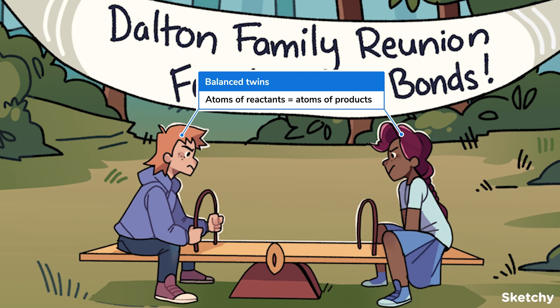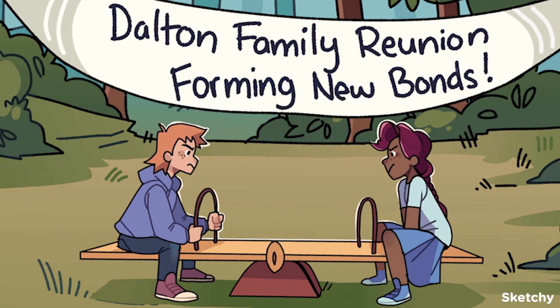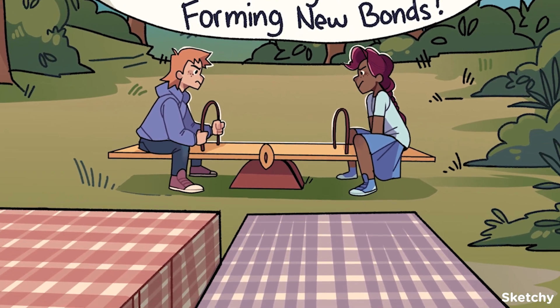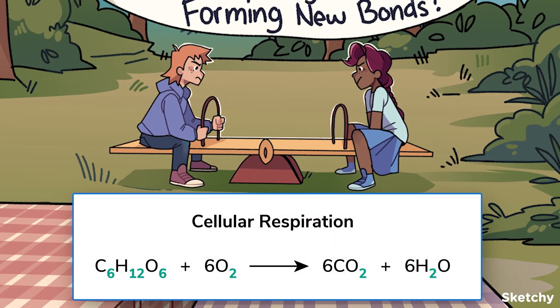Keeping our equations as balanced as the twins comes down to keeping track of subscripts and coefficients. Let's look at the balanced equation for cellular respiration as an example. The subscripts in a formula tell you how many atoms of each element are in that molecule. Since the unique combination of subscripts defines a molecule, subscripts never change.